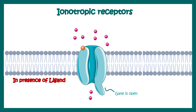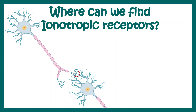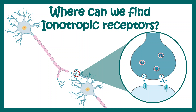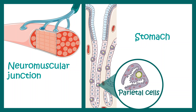The open gate allows diffusion of ions through the pore — that is how ionotropic receptors work. These receptors can be found in many locations: one common location is the synapse of neurons, where they are generally found on the post-synaptic membrane, binding neurotransmitters and allowing cation influx. They are also found in neuromuscular junctions, the stomach, and the lining of the gastrointestinal tract.